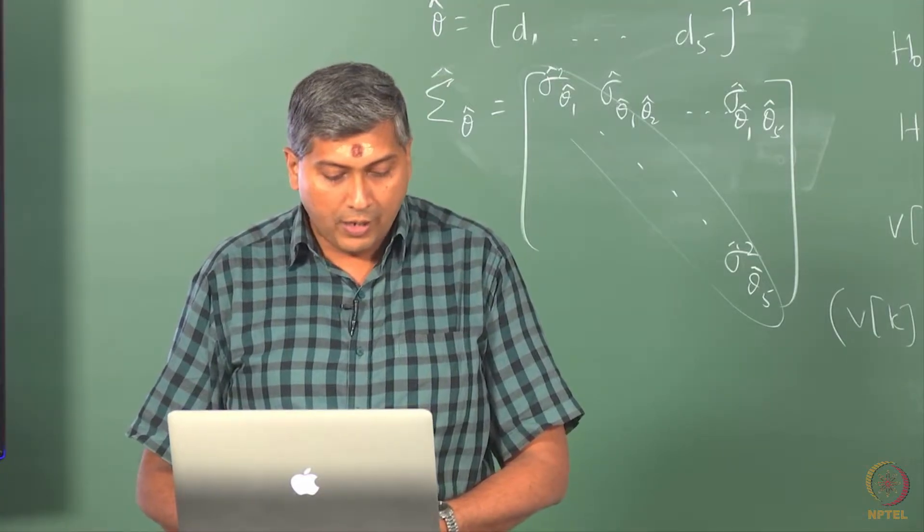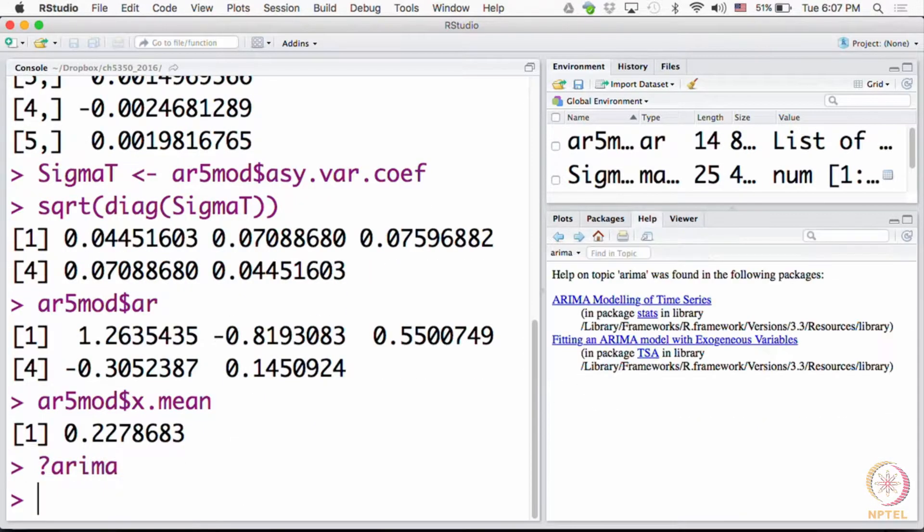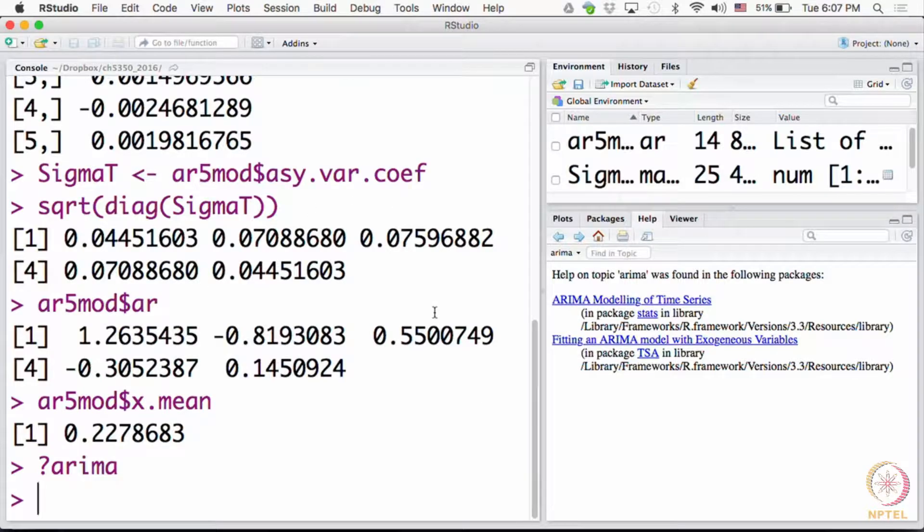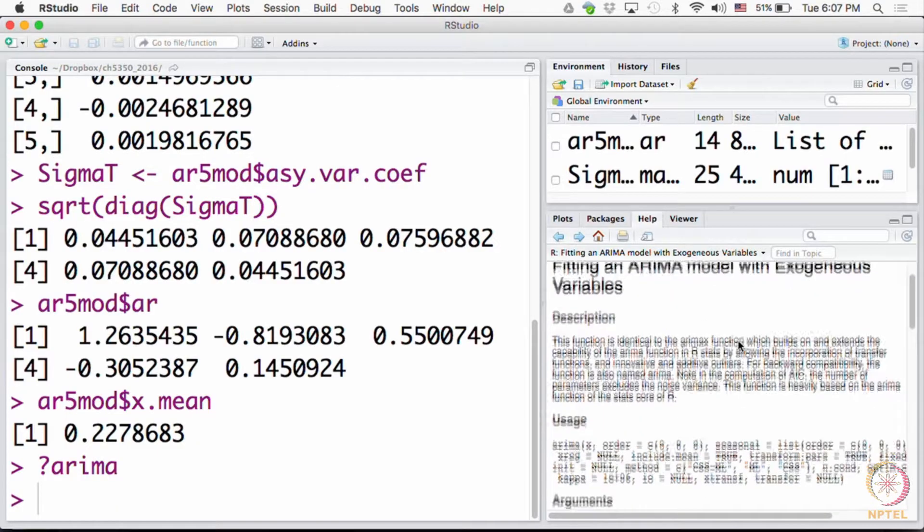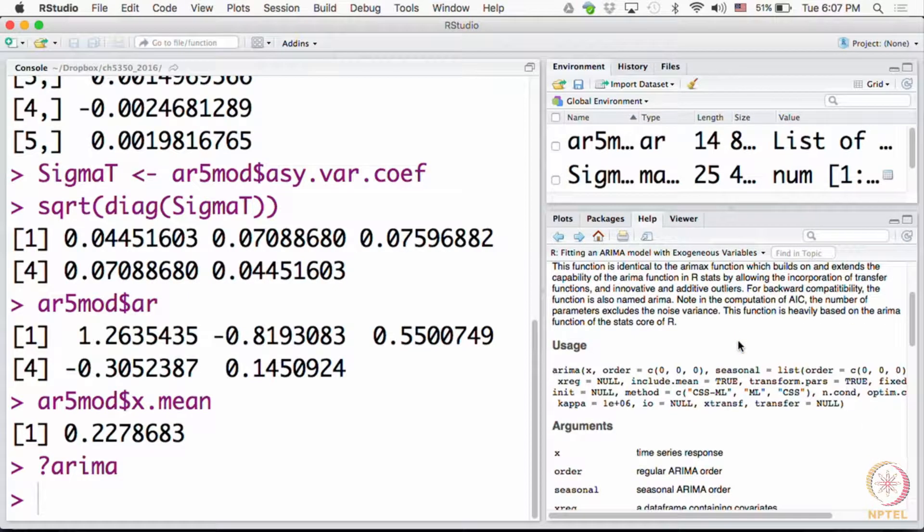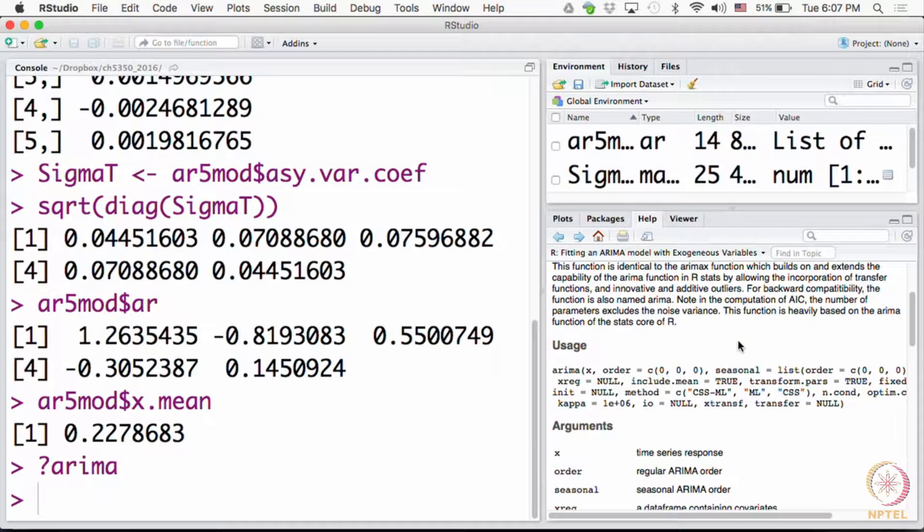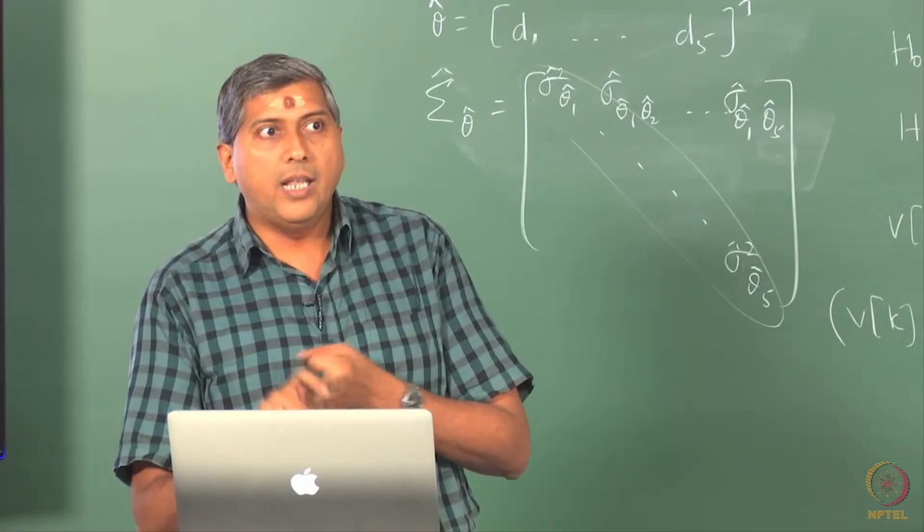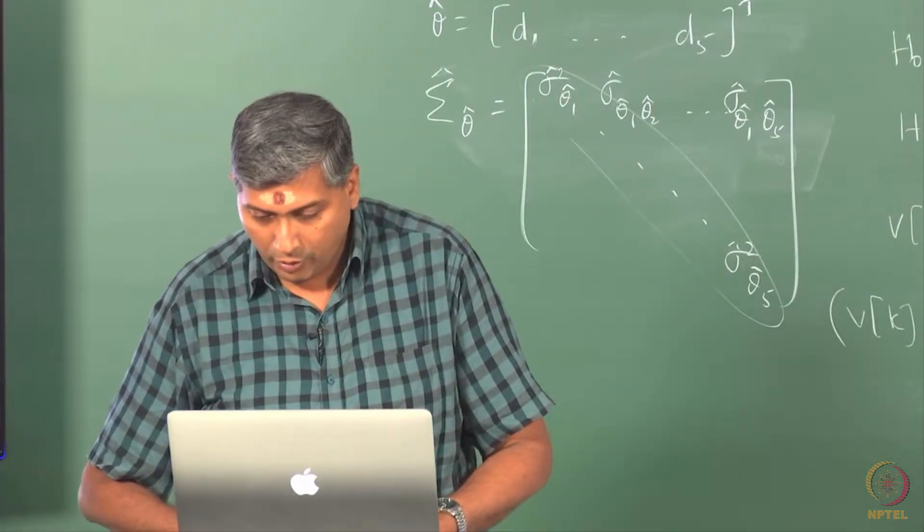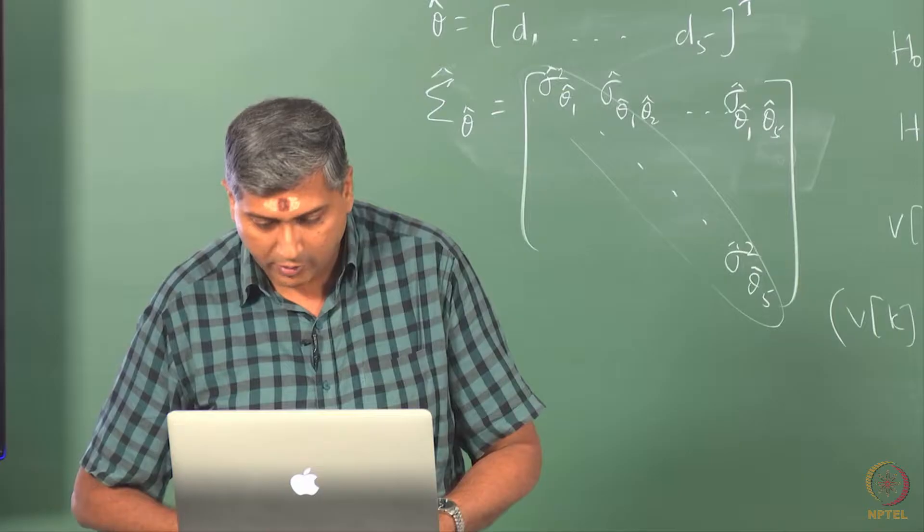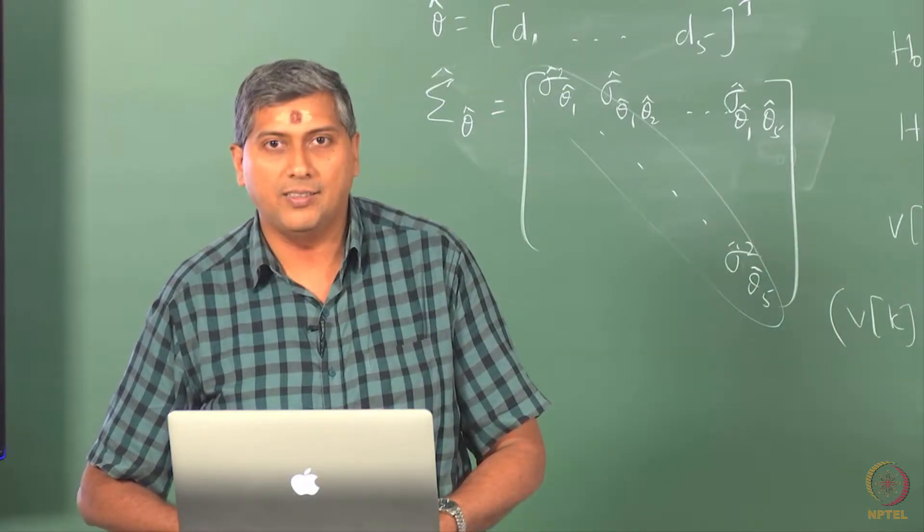So the point is that you get unique estimates and algorithms are simple in AR. So very quickly, let us look at the ARIMA. We will stick to this because the ARIMA that comes with TSA has some advantages. Again we have to supply the series and the orders and then again specify include.mean and there is one option that I would like to draw your attention to which is transform.pars.